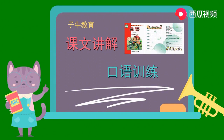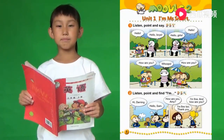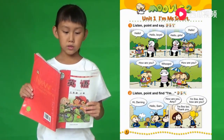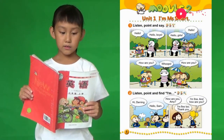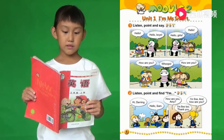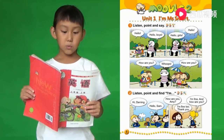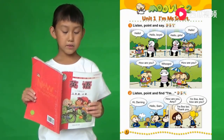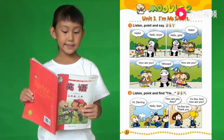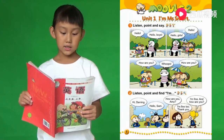请继续收看更详细的课文讲解和口语训练。请把书翻到第八页。Module 2 模块二 Unit 1 一单元 I'm Miss Smart. 我是Smart女士。1 Listen, point, and say. 一听、指、和说。